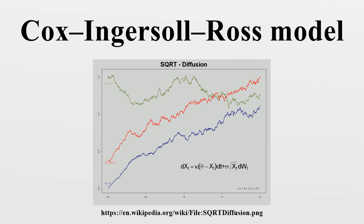The CIR process is an ergodic process and possesses a stationary distribution. The same process is used in the Heston model to model stochastic volatility.